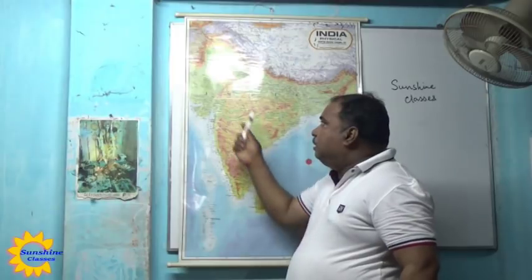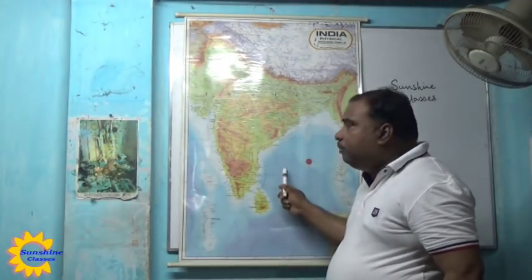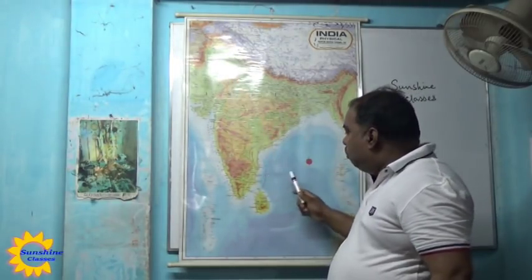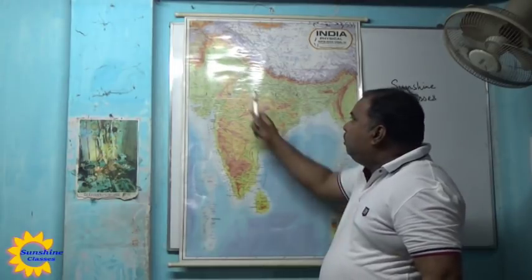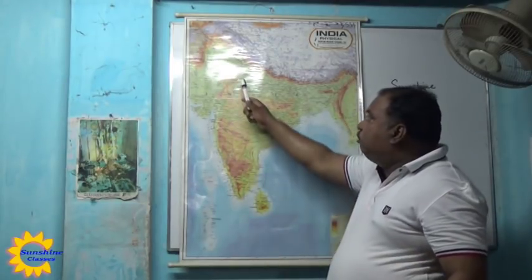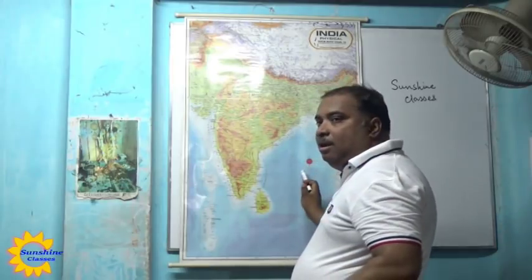Due to this pressure difference between northern India and the water body — the water body being at high pressure and northern India at low pressure — moisture-laden or water vapor-laden air flows from the water body to the landmass. When it goes there it rises up, and as it rises it becomes cool. When it cools down, the moisture or water vapor inside it condenses into water and falls down. This is rainfall in India during the summer season.